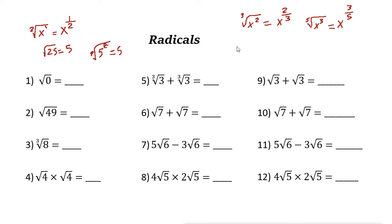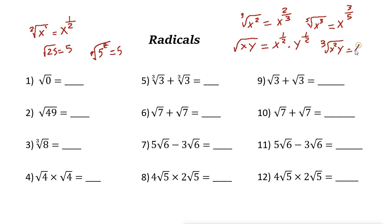If you have two numbers — for example the square root of x times y — you can write it as x to the power of one half times y to the power of one half. If instead it is the cube root and you have x squared times y, then you can write x to the power of 2 thirds — where 2 is the power and 3 is the cube root — times y to the power of 1 third.